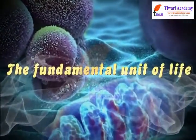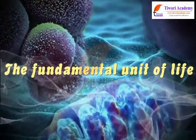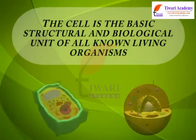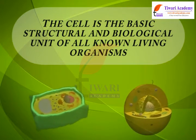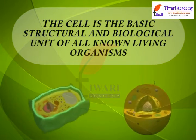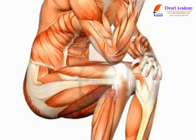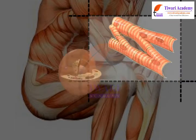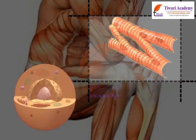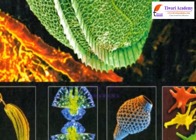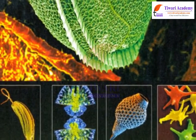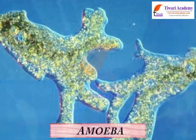The Fundamental Unit of Life. Dear students, the cell is the basic structural and biological unit of all known living organisms. A cell is the smallest unit of all living organisms that is capable of carrying out all the activities of life. Some organisms consist of only one cell — for example, amoeba.